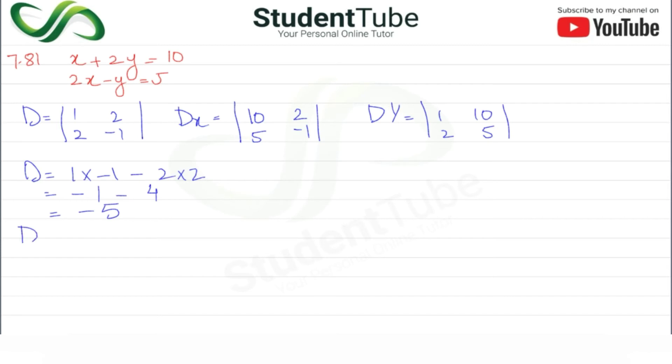Now we find Dx. In Dx, 10 multiply by minus 1 minus 5 multiply by 2, so minus 10 minus 10, this becomes minus 20.